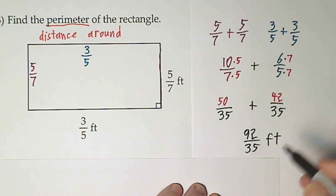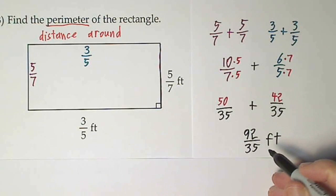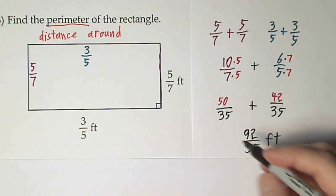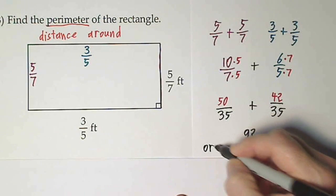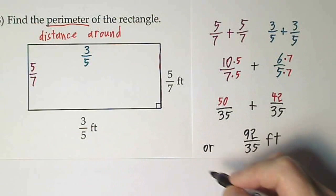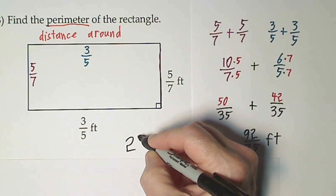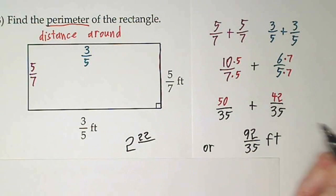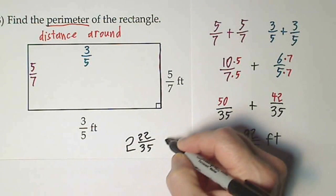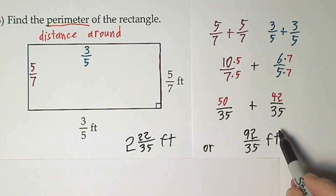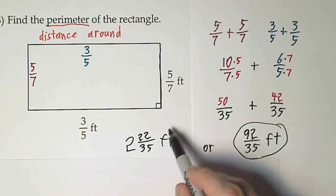Might look a little strange. You can write that as a mixed number. That would go in there twice. Or, that would go in twice with 22 left over. 2 and 22/35 feet. I would certainly accept either answer.